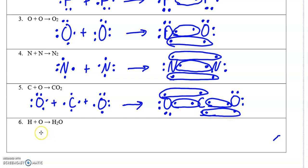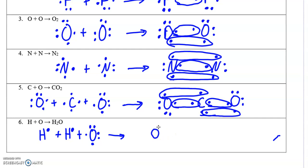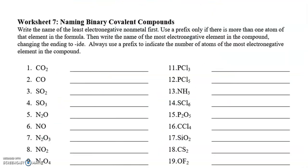And lastly, let's do H₂O. We already know that oxygen can form two bonds and hydrogen can form one each. So there's a single bond, and there's another single bond — that's what that would look like. Alright, on to worksheet seven. We're going to name some covalent compounds, and here we go.